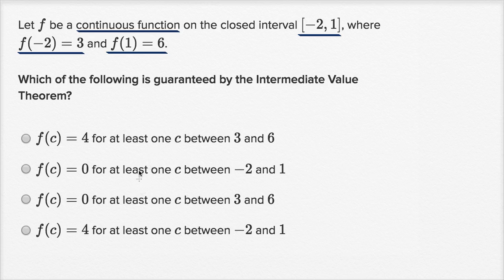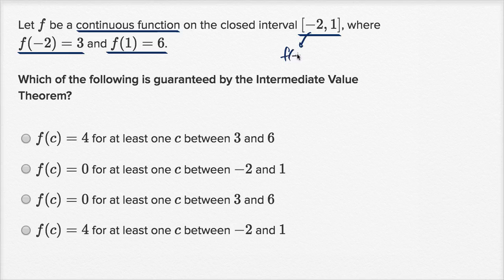Before I even look at this, what do we know about the intermediate value theorem? It applies here — it's a continuous function on this closed interval. We know what the value of the function is at negative two: it's three. So f of negative two is equal to three, and f of one is equal to six.